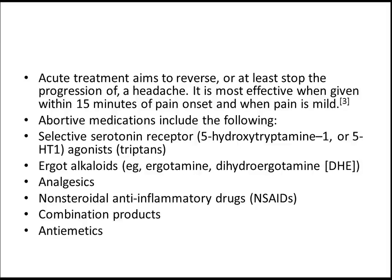For treatment, acute therapy aims to reverse or at least stop the progression of the headache. It is most effective when given within 15 minutes of pain onset and when the pain is still mild. Abortive medications include: serotonin receptor agonists — triptans, with sumatriptan being the most commonly used drug — ergotamine, NSAIDs, combination products, and antiemetics.